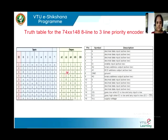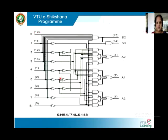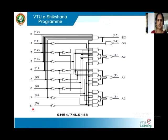For this particular truth table, the logic circuit has been drawn by the manufacturer. This is the internal diagram of the 74LS148. We have the output pins EO, GS, A0, A1, and A2, which are derived from inputs 0 to 7 and the enable input pin. This is about the 8-to-3 line priority encoder. We will stop here and start with the next topic.